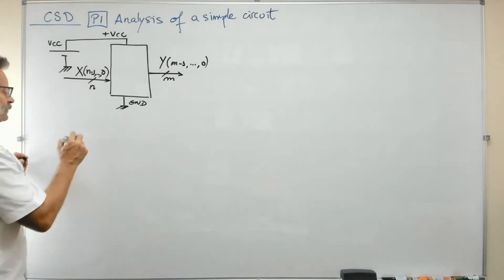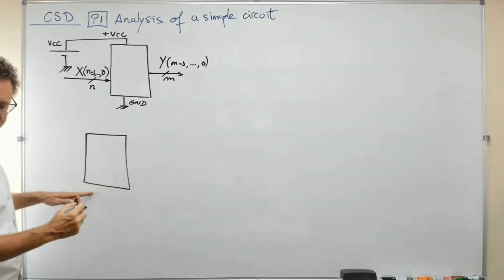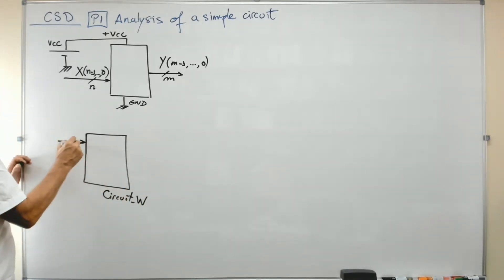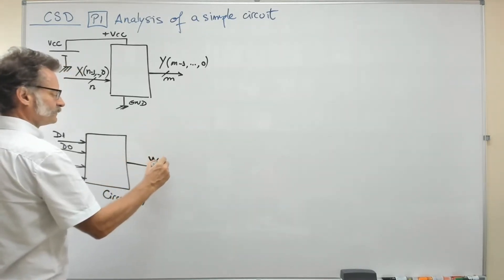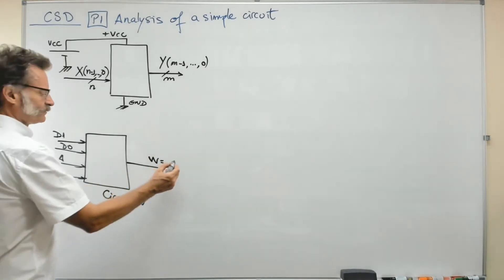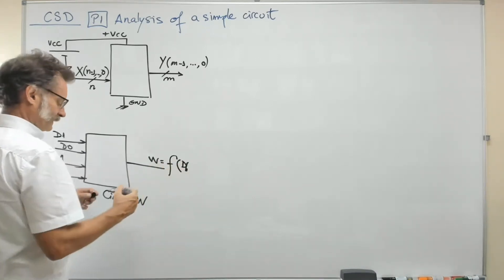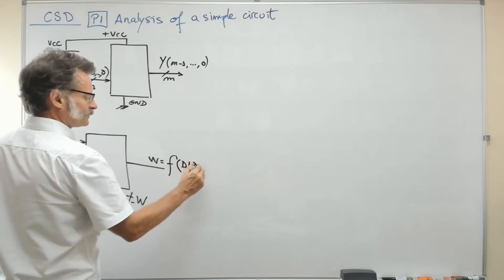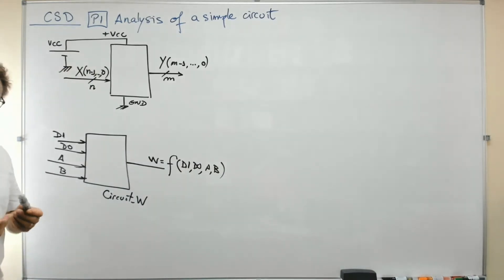For example, the first circuit in P1 is like this: you have the box, and this is the circuit W. You have d1, d0, a, and b as inputs to the circuit, and this time you have a single output W. The aim of the circuit is to find W as a function of the inputs d1, d0, a, and b.